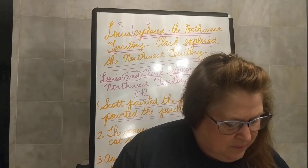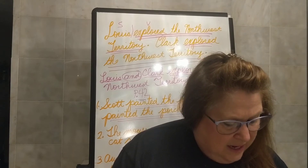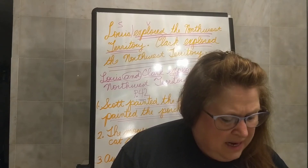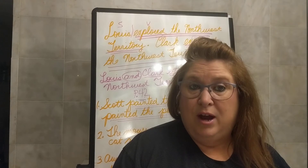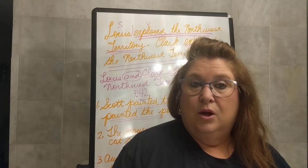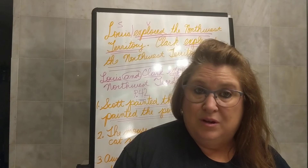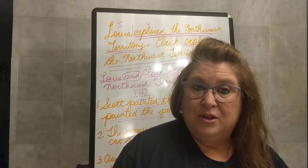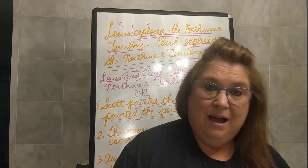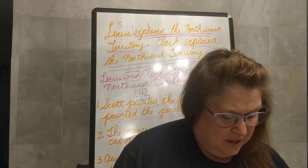Look at section C. Underline the verb two times, underline the subjects one time. Look for compound subjects and verbs. Number one: Many poems have been written by Henry Wadsworth Longfellow. What is our verb phrase? Have been written — underline it twice. Who or what have been written? Poems — underline it once. That is our subject.